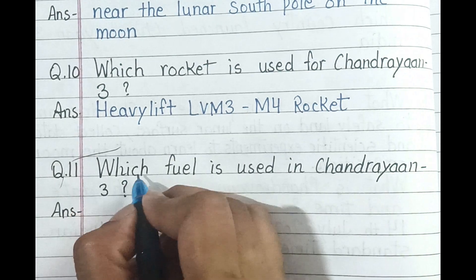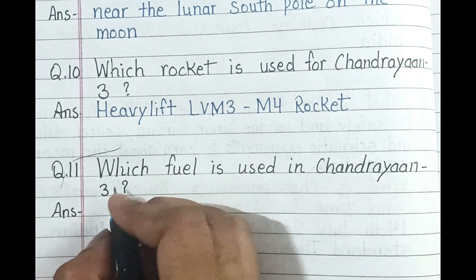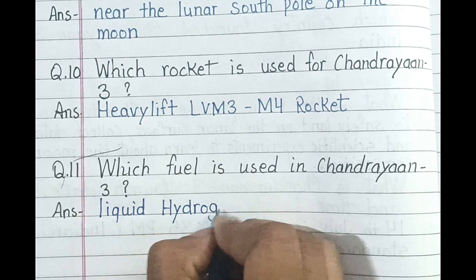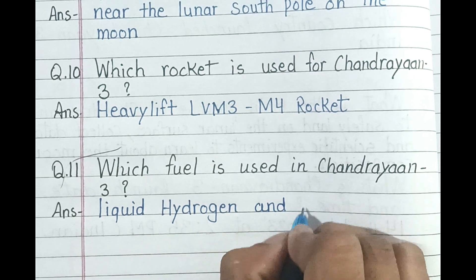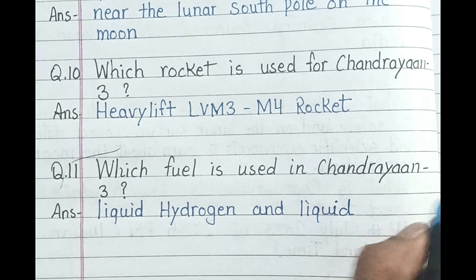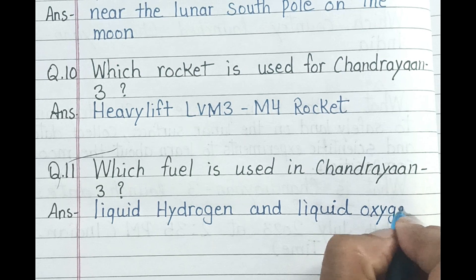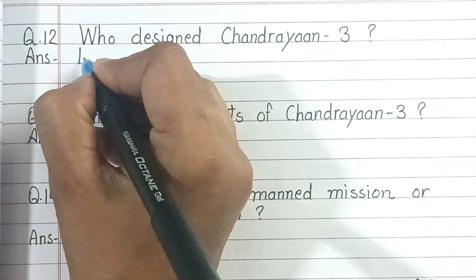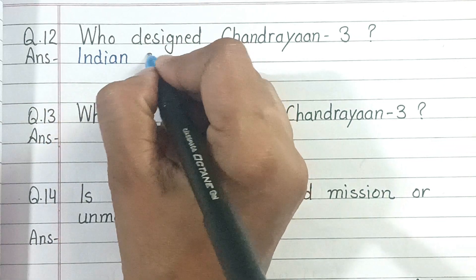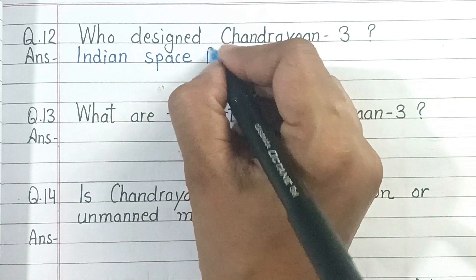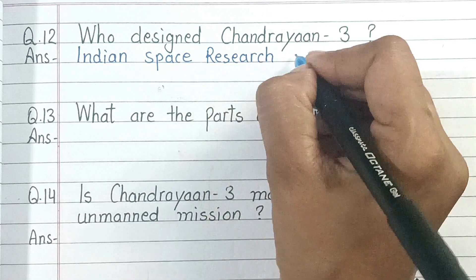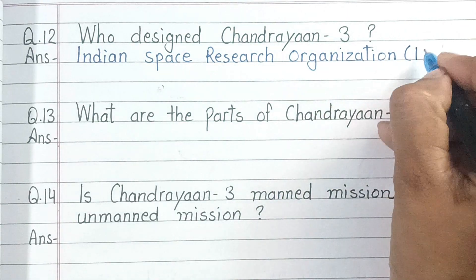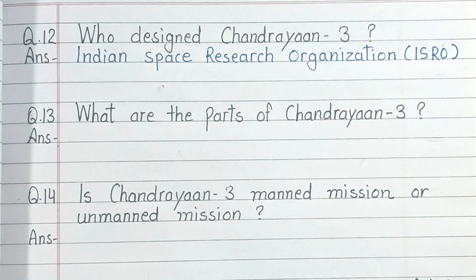Question number 11. Which fuel is used in Chandrayaan 3? And the answer is Liquid Hydrogen and Liquid Oxygen. Question number 12. Who designed Chandrayaan 3? And the answer is the Indian Space Research Organization, ISRO.